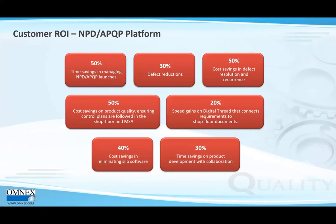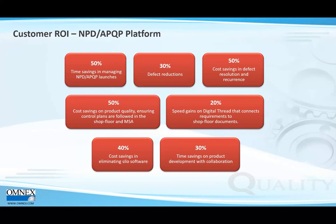Now for return on investment for the NPD APQP platform: 50% time savings in managing new product development launches, 30% defect reduction, 50% cost savings in defect resolution and reoccurrence, 50% cost savings on product quality, 20% speed gains on the digital thread that connects requirements to shop floor documents, 40% cost savings in eliminating silos, and 30% time savings on product development with collaboration.